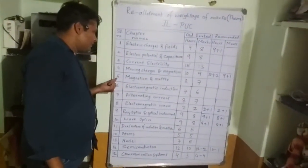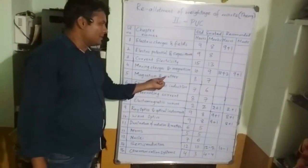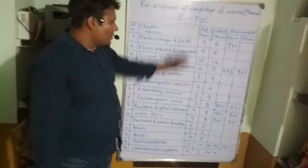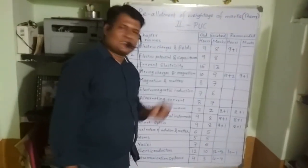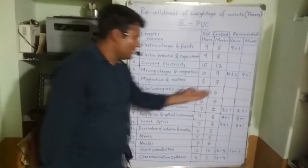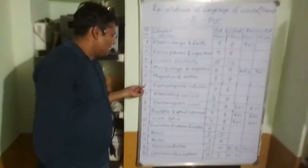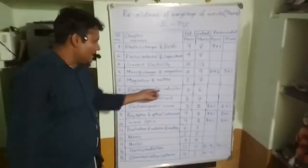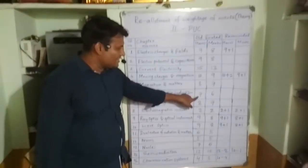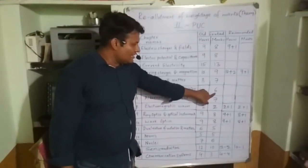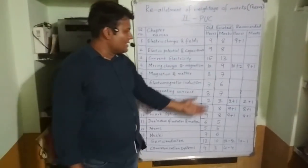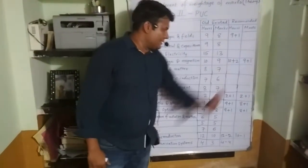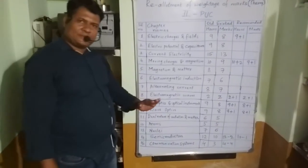The fifth chapter, Magnetism and Matter, had eight hours of teaching and seven marks in the old syllabus. No changes have been made here. For the sixth chapter, Electromagnetic Induction, teaching hours is seven and six marks were allotted in the old section, and no updates have been made — no changes have taken place.